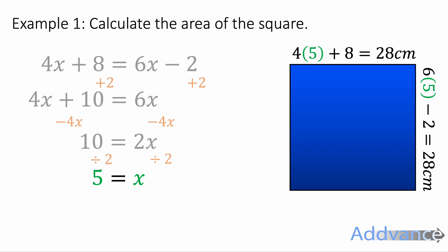Now remember the question asked us to find the area so all we have to do is multiply the sides together. So 28 times 28 is 784 centimeters squared. And that is the final answer.